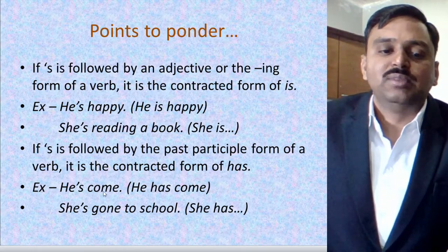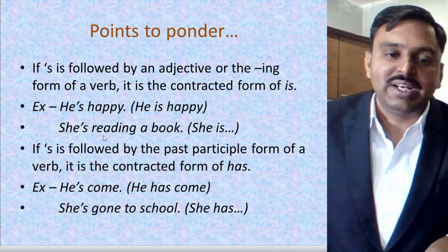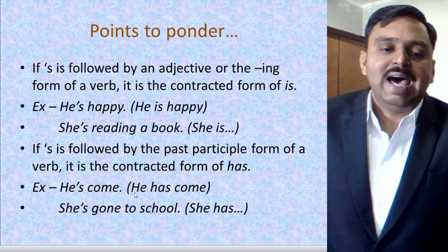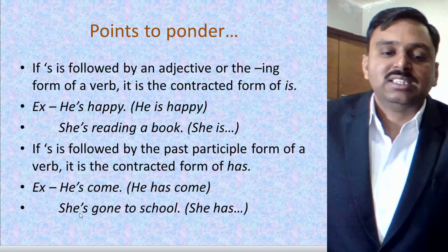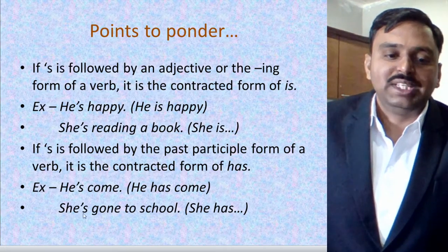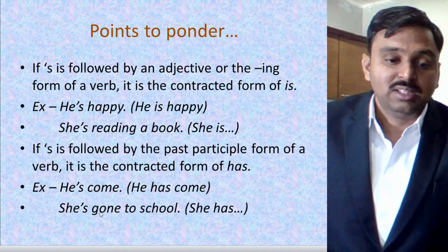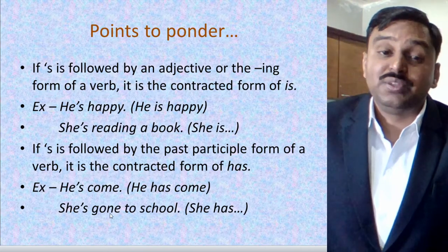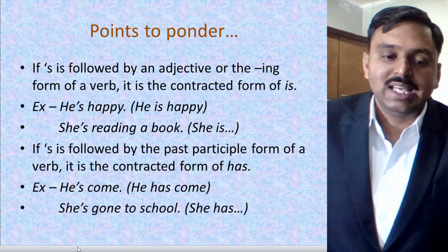So 'has' will come when there is a V3 form after it, while adjectives and '-ing' verbs indicate 'is.' For example: 'he's come' — come is V3 (come, came, come). And 'she's gone to school' — gone is V3 (go, went, gone). Both verbs are in V3 form, so the apostrophe 's' here means 'has.'